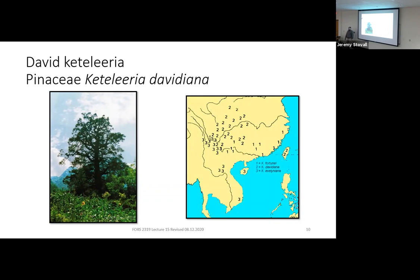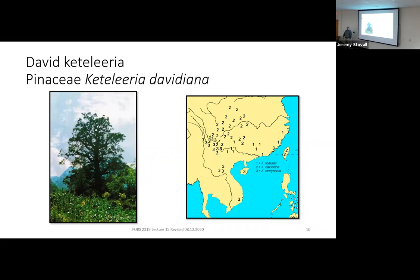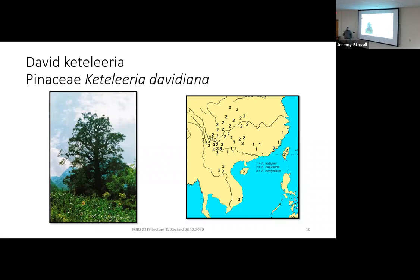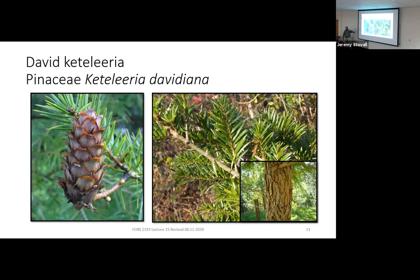Next is Keteleeria davidiana in the Pinaceae family. It's native to Southeast Asia, handles warm and dry climates better than many hardwood trees, and is somewhat rare in China. In the southeastern U.S., where winters are mild, it could become a popular ornamental because we don't have fir trees that grow well this far south — people like firs for their classic Christmas tree appearance, and Keteleeria looks like a fir but can handle our climate.